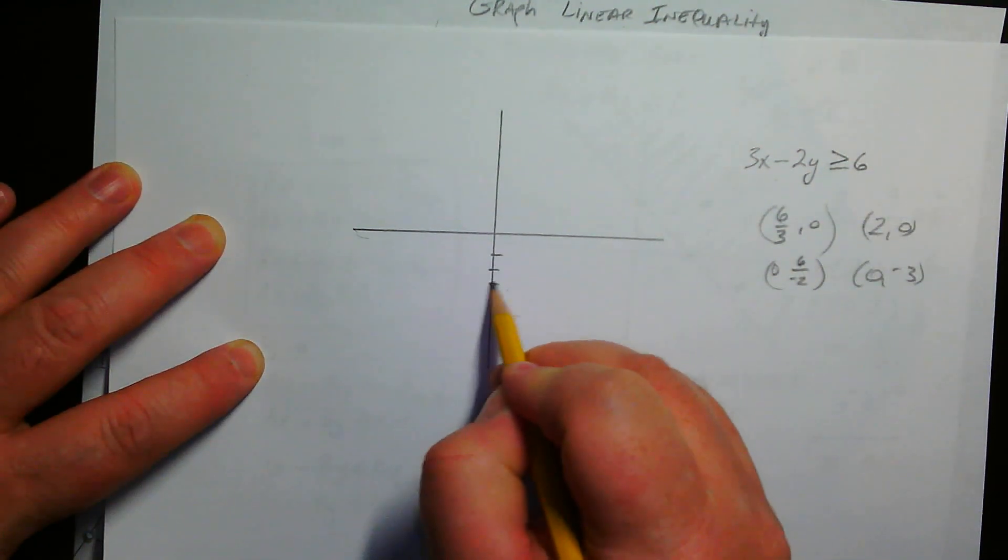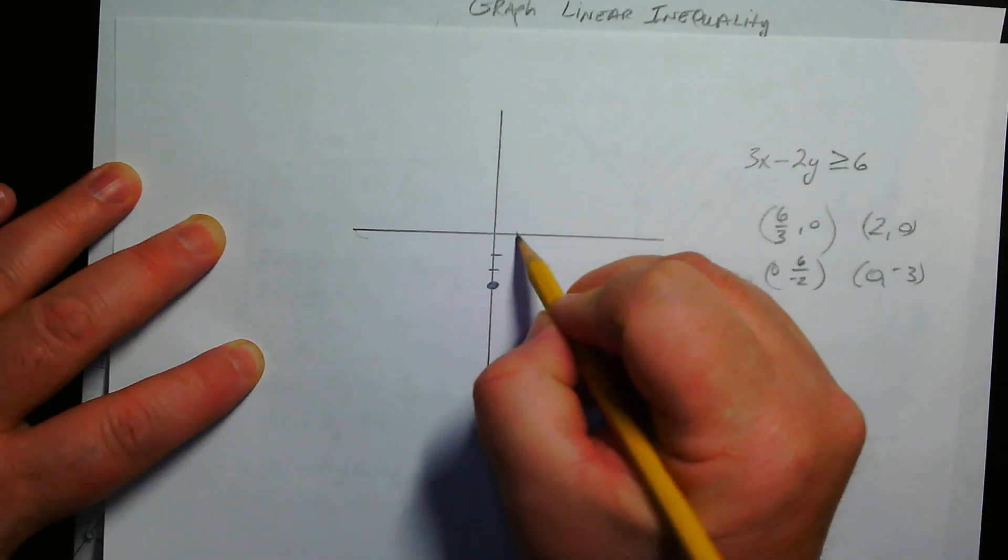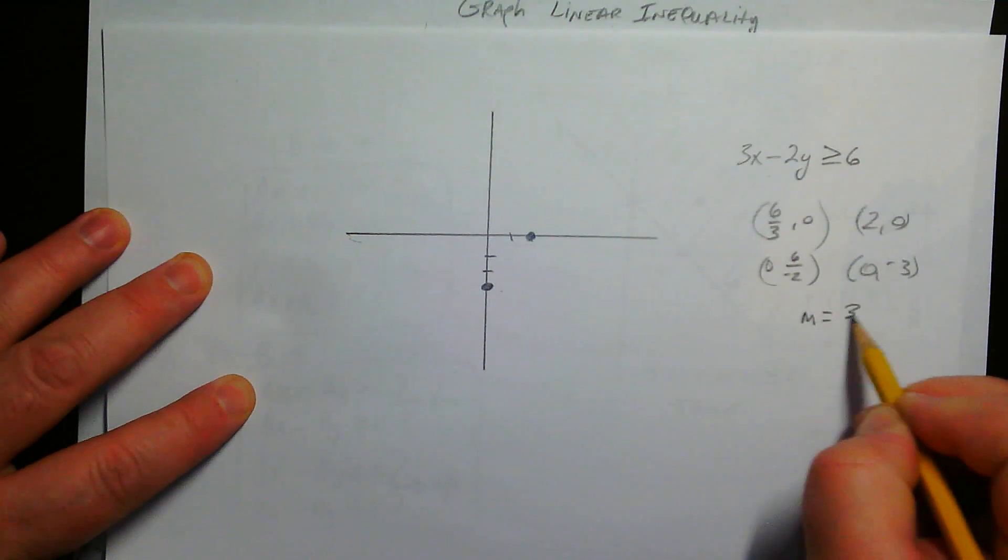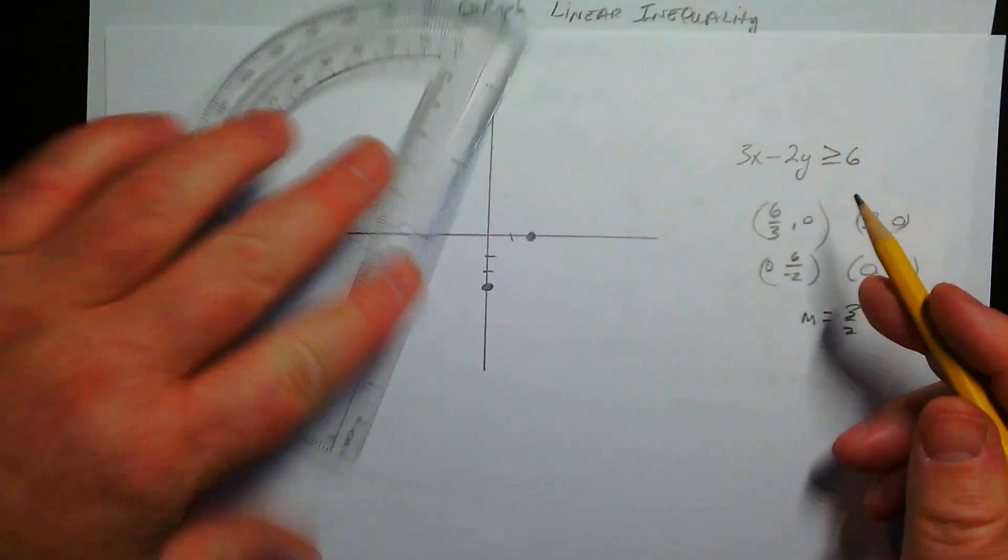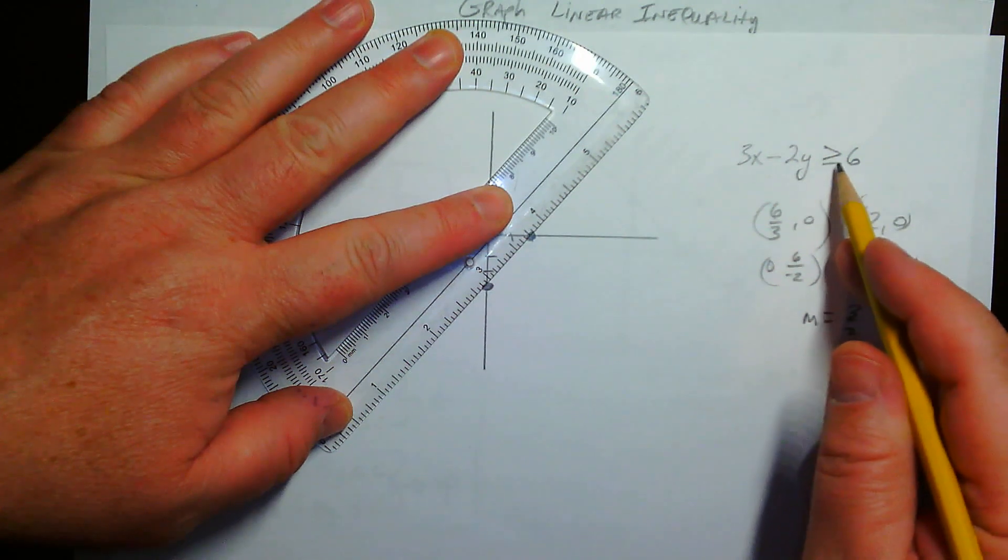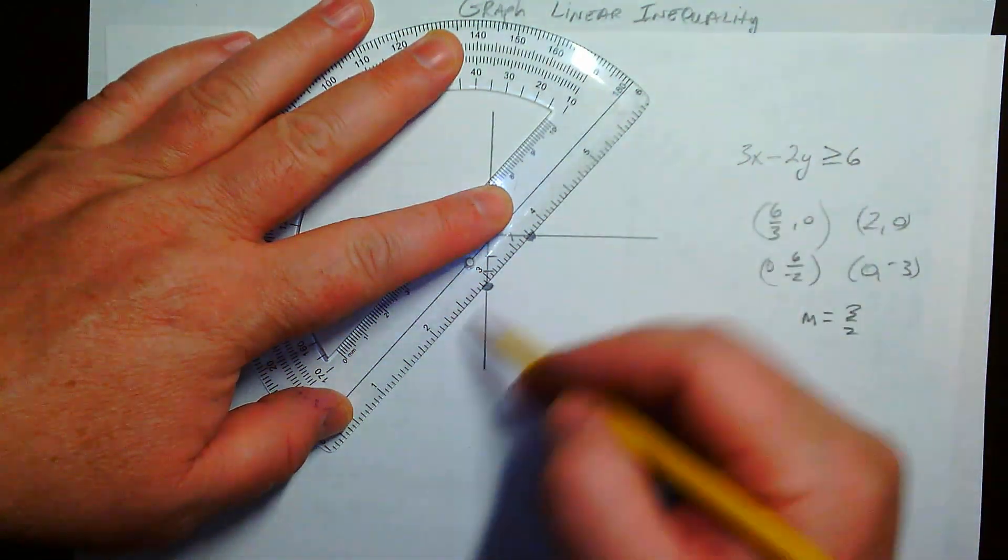So 1, 2, 3. 0, negative 3. And 1, 2. So here we have a positive slope of 3 over 2 because that was negative. And we still have a solid line. If that little line wasn't there, if it was a strict inequality, this would be a dotted line.